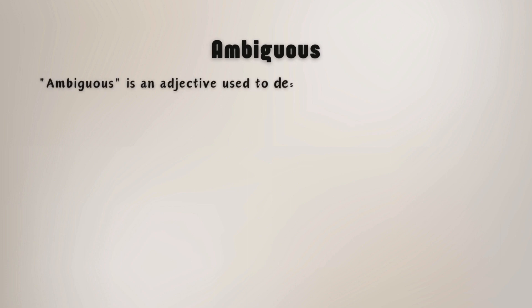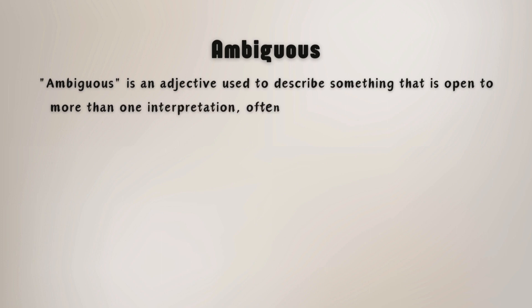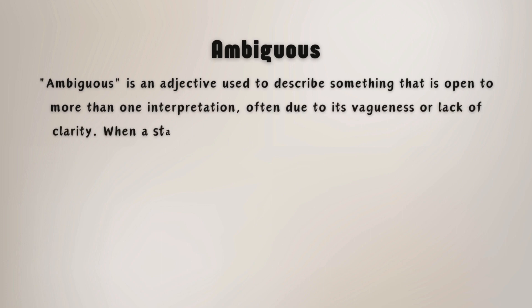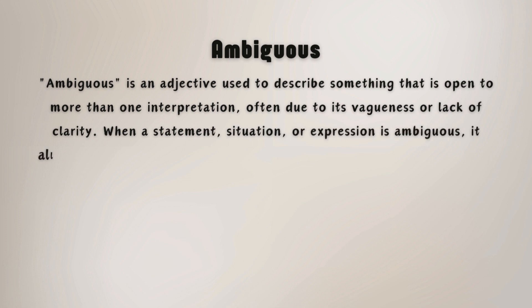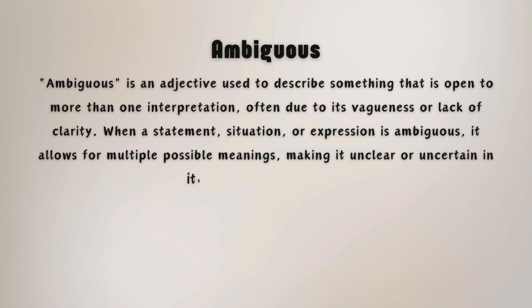Ambiguous is an adjective used to describe something that is open to more than one interpretation, often due to its vagueness or lack of clarity. When a statement, situation, or expression is ambiguous, it allows for multiple possible meanings, making it unclear or uncertain in its intended significance.